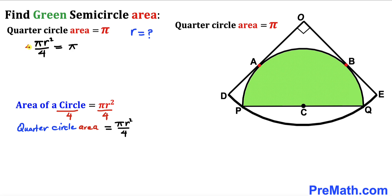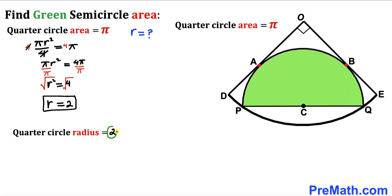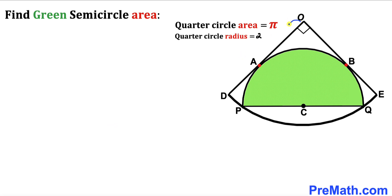Multiplying both sides by 4 removes the fraction, giving πr² = 4π. Dividing both sides by π gives r² = 4. Taking the square root of both sides, our radius r = 2 units. So the quarter circle radius is 2 units, and likewise the length OE is 2 units as well.